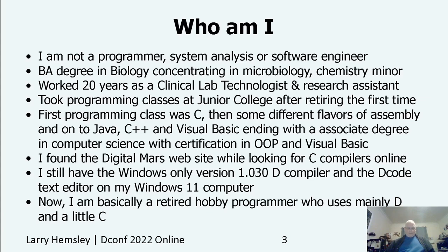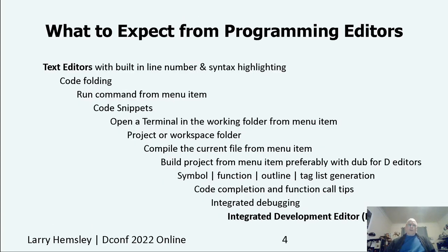As you can see, I like bullet lists. However, I'm not going to read each bullet from now on, but please still read them at your own speed — there may be a quiz at the end. So what do we expect from programming editors? There are simple basic text editors without built-in line numbers or syntax highlighting, like nano on Linux or Notepad on Windows, that are not normally used in programming. Code editors are just text editors that have built-in line numbers and syntax highlighting, and one or more of the features in the inverted step pyramid I've built here, all the way up to an integrated development editor or IDE.